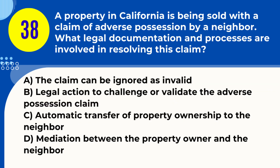Question 38. A property in California is being sold with a claim of adverse possession by a neighbor. What legal documentation and processes are involved in resolving this claim? A. The claim can be ignored as invalid. B. Legal action to challenge or validate the adverse possession claim. C. Automatic transfer of property ownership to the neighbor. D. Mediation between the property owner and the neighbor. Answer: B. Legal action to challenge or validate the adverse possession claim. Explanation: Resolving an adverse possession claim in California typically involves legal action to either validate or challenge the neighbor's claim based on specific legal criteria.